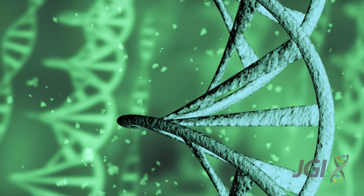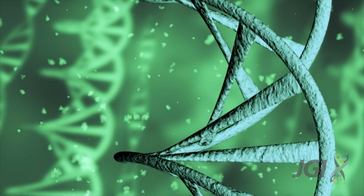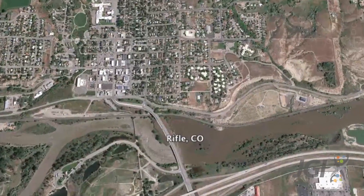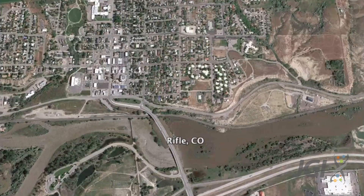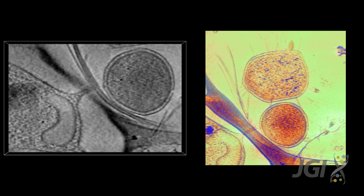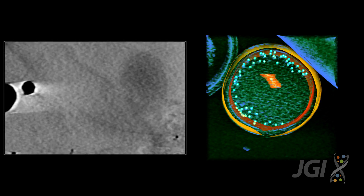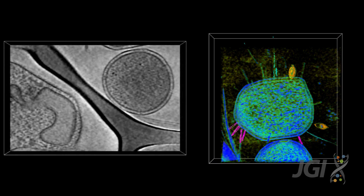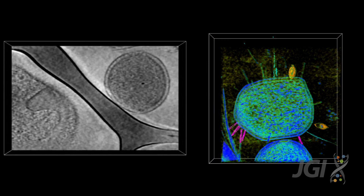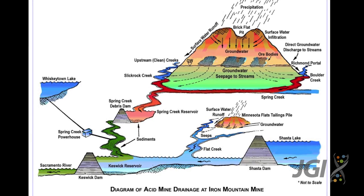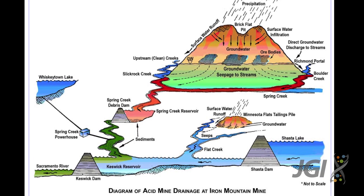We first conceived and deployed this approach to study much more simple communities than we're studying here today at RIFORM. These communities were dominated by just a few organisms, which made them very tractable for this approach. The organisms formed microbial communities in very acidic environments, where they are now understood to play critical roles in environmental acidification and the release of toxic metals into groundwater.